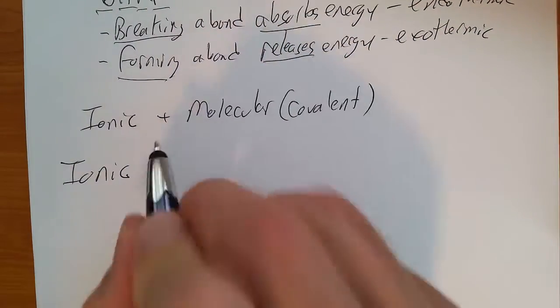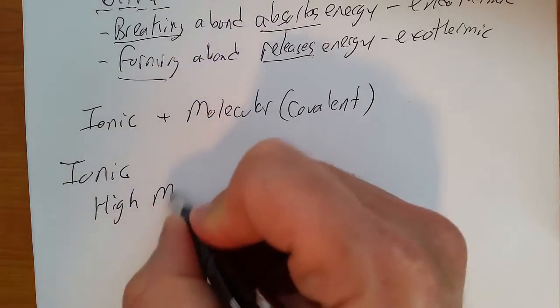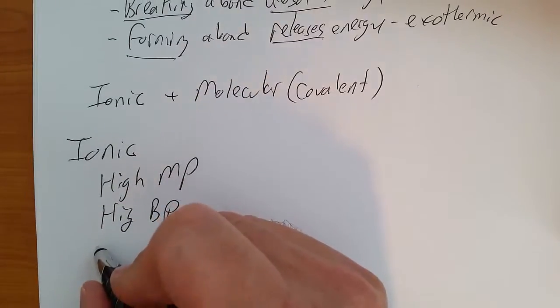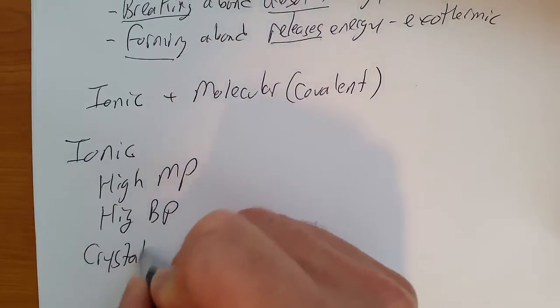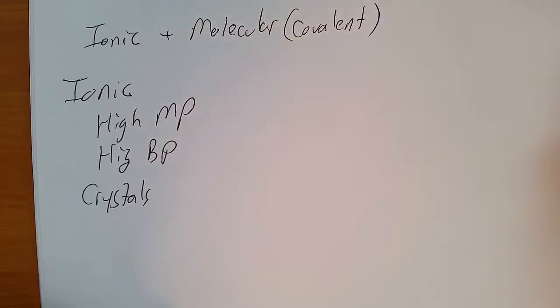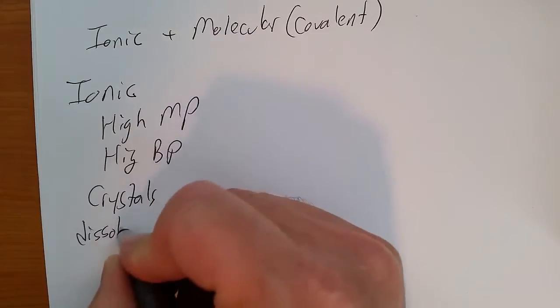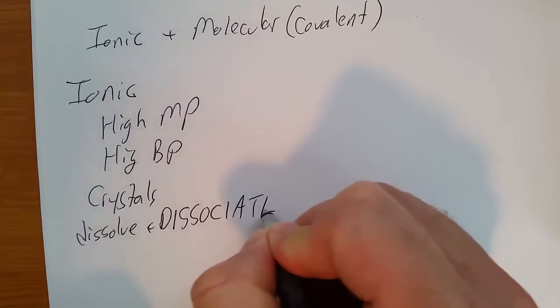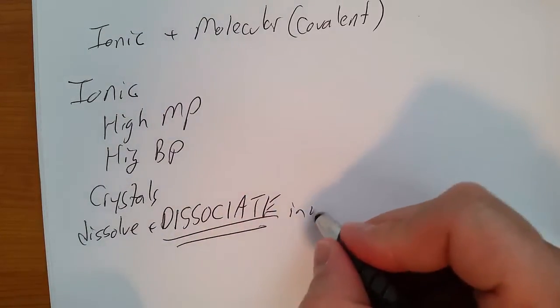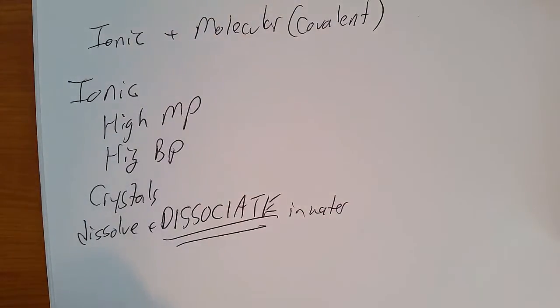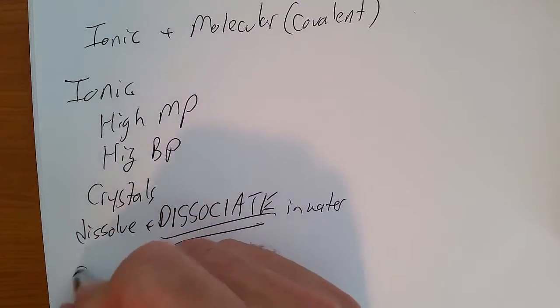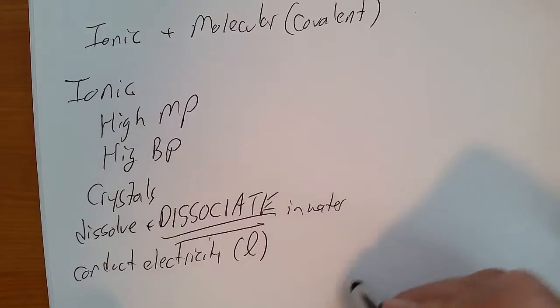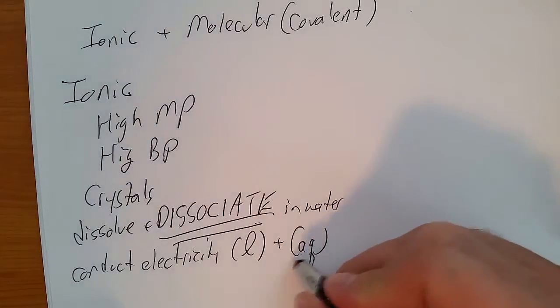Ionic substances have high melting points, high boiling points. They tend to form crystals. They dissolve and dissociate in water, and they're going to be electrolytes. They conduct electricity when they're a liquid and when they're dissolved in water, aqueous.